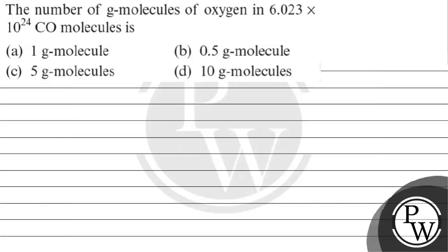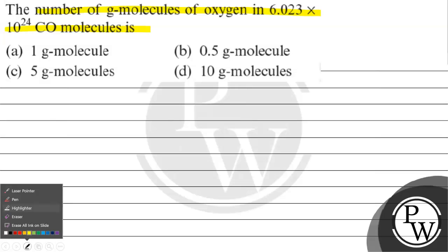Hello, let's read this question. The question says: number of gram molecules of oxygen in 6.023 × 10²⁴ CO molecules. Option A: 1 gram molecule. Option B: 0.5 gram molecule. Option C: 5 gram molecules. Option D: 10 gram molecules.